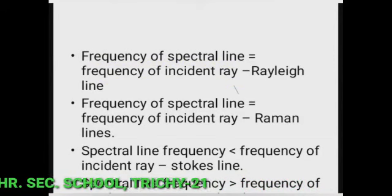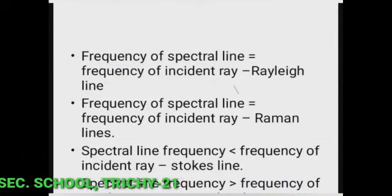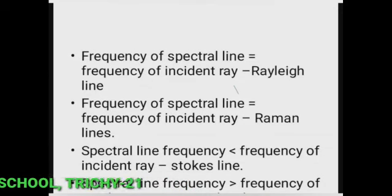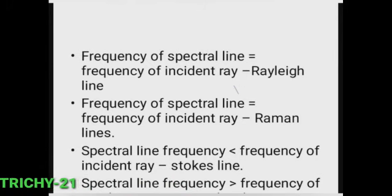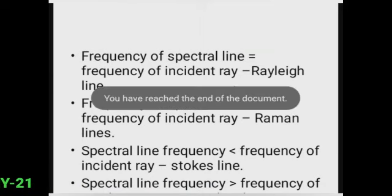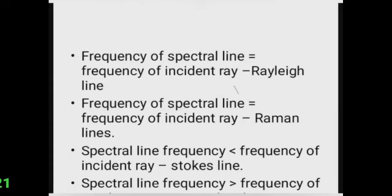The lines having frequencies lower than the incident frequency are called Stokes lines, and the lines having frequencies higher than the incident frequency are called anti-Stokes lines. Hope you all understood about the scattering of light and the different types of scattering. Thank you.